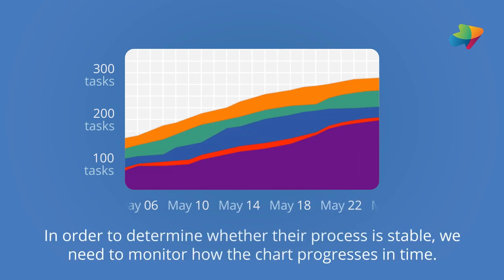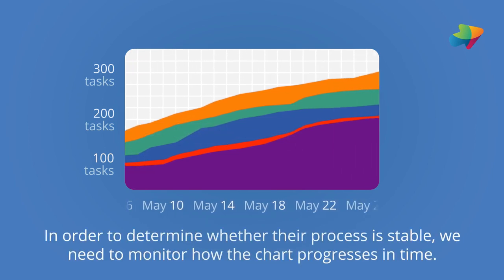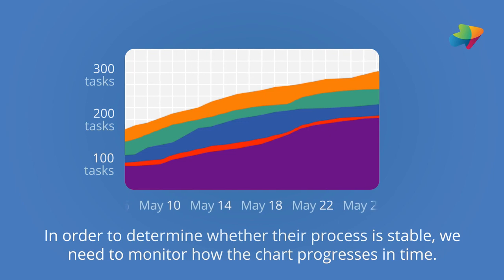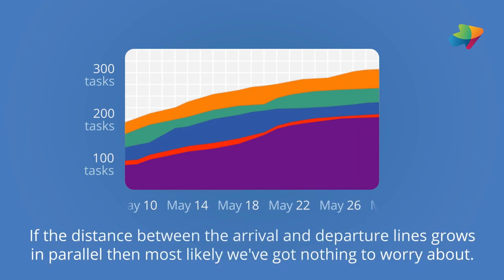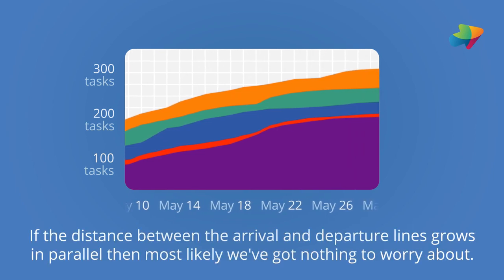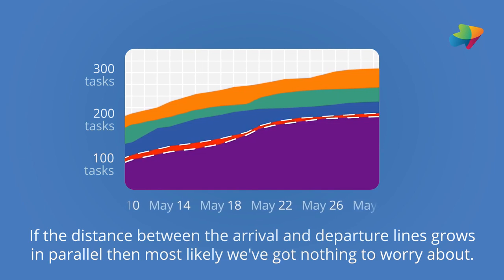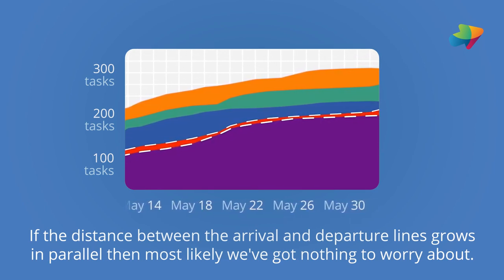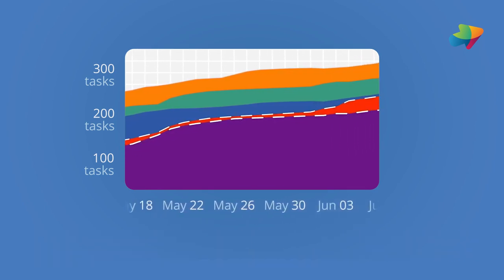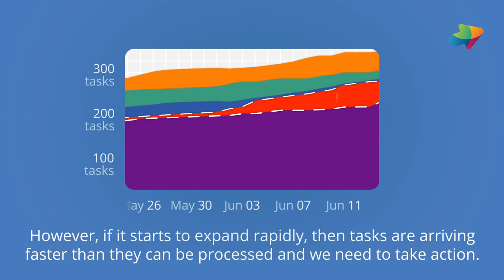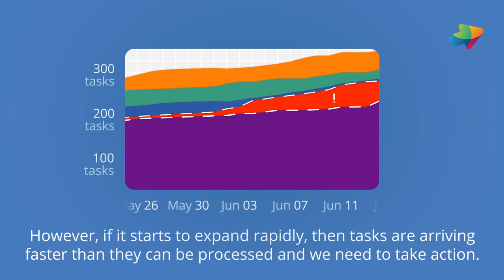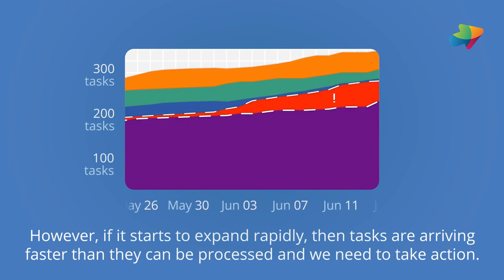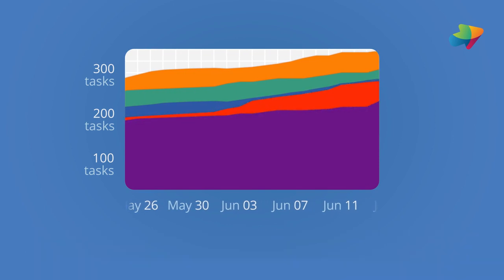In order to determine whether their process is stable, we need to monitor how the chart progresses in time. If the distance between the arrival and departure lines grows in parallel, then most likely we've got nothing to worry about. However, if it starts to expand rapidly, then tasks are arriving faster than they can be processed, and we need to take action.